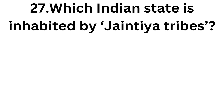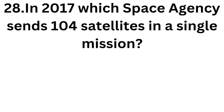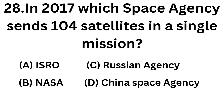The twenty-seventh question: which Indian state is inhabited by the Jaintia tribe? The answer is Arunachal Pradesh. The twenty-eighth question: in 2017, which space agency sent 104 satellites in a single mission? Options are: ISRO, Russian agency, NASA, Chinese space agency. The answer is ISRO.